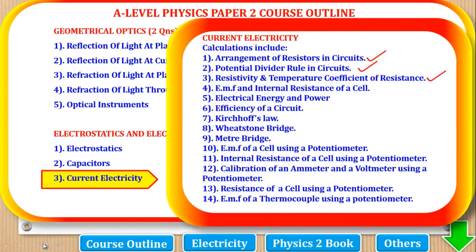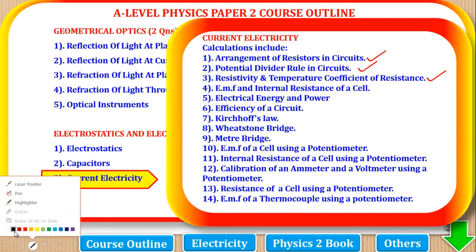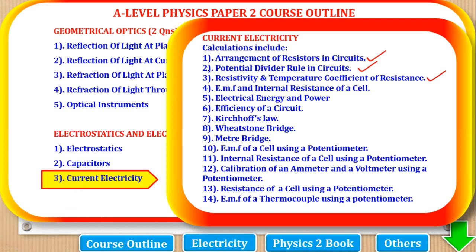The calculations of electricity we have done so far: the first one is arrangement of resistors, the second is the potential divider rule, and now we are on this third one which is resistivity and temperature coefficient of resistance.